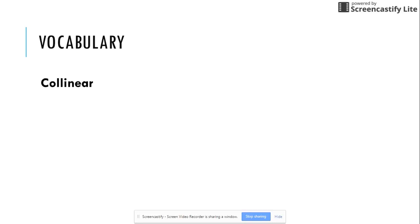Another vocabulary term is the term collinear. Co meaning together and linear meaning line. Collinear literally means points that lie on the same line. Here we see a picture that has three points that are on the same line. All three points are collinear, but I would only use two of them to name the line.